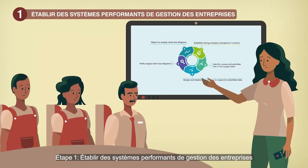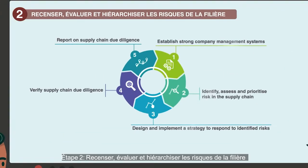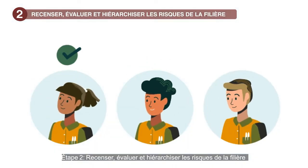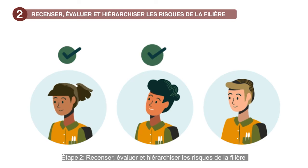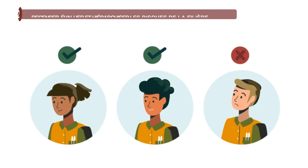Step 1: Establish strong company management systems. Step 2: Identify, assess and prioritise risks in supply chains.